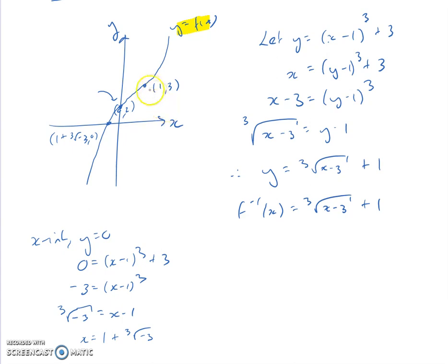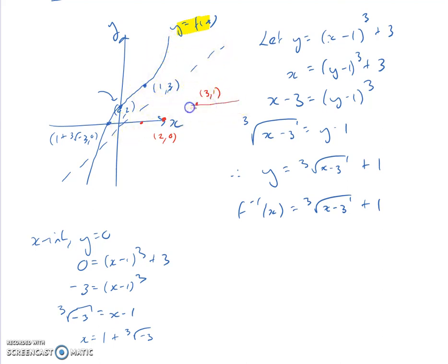What I'm going to try and do is sketch the inverse by swapping the x and y values around. So (1, 3) is the point of inflection, which means (3, 1) goes here on the inverse. And if (0, 2) is the y-intercept of the original, then (2, 0) goes on the inverse. My sketch is not very good — I have to show you on the website — but basically it has to be a reflection in the line y equals x, so it's going to look something like this.